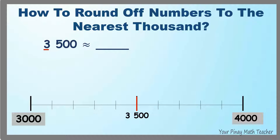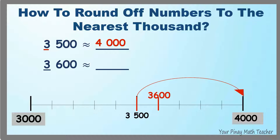Once the number reaches the middle, it has to be rounded off to the greater number. So, 3,500 and more should be rounded off to 4,000. What if we have 3,600? Of course, we have to round it off to 4,000.